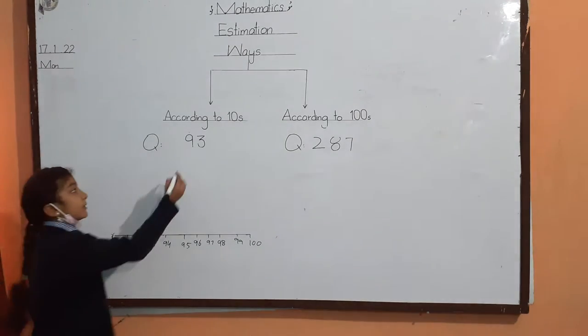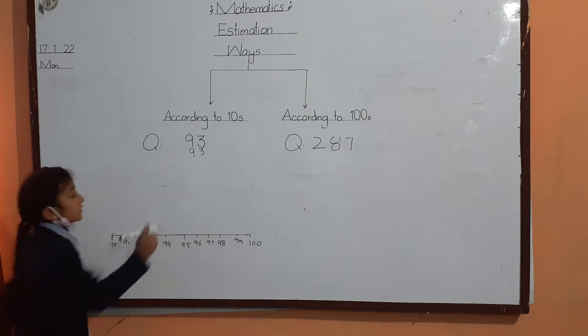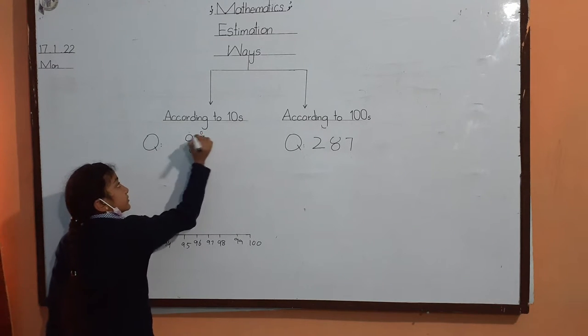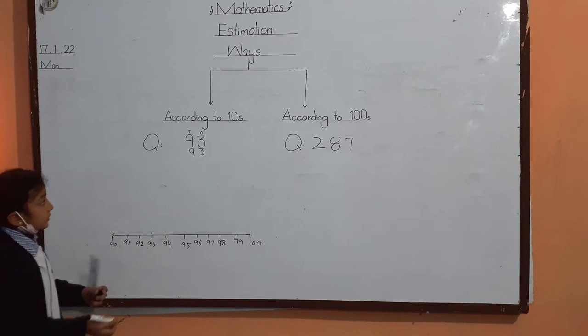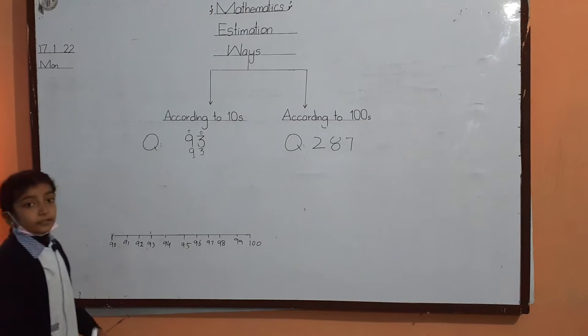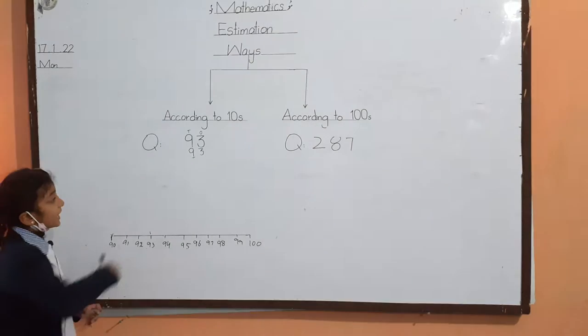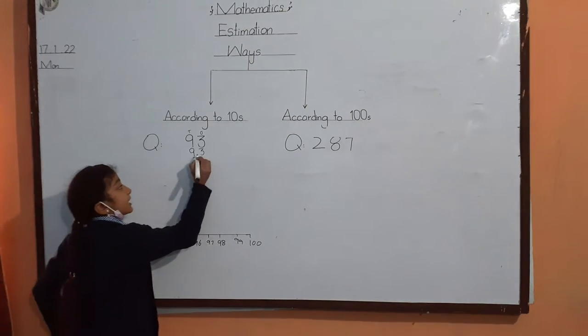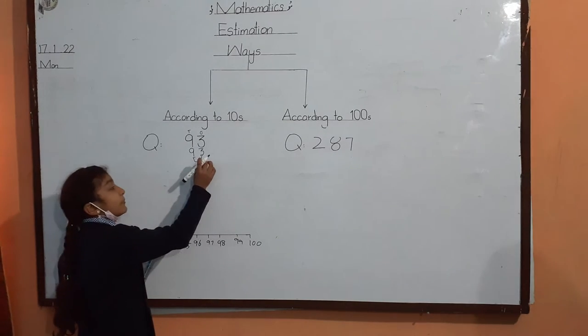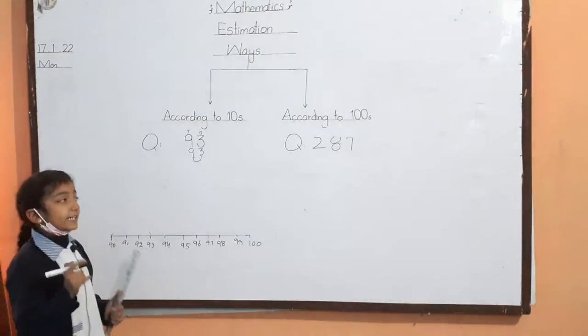First step, we write the question. Second step, we write the place value. Third step, we underline. And we will see that next to the underlined digit, we place an arrow. We will check whether the digit where we placed the arrow is less than 5 or greater than 5.